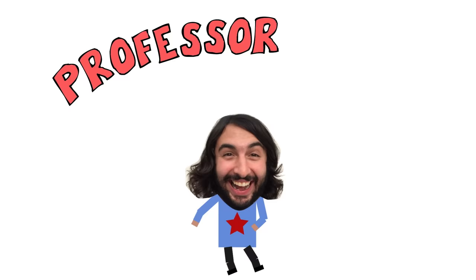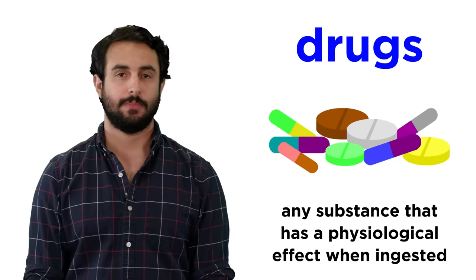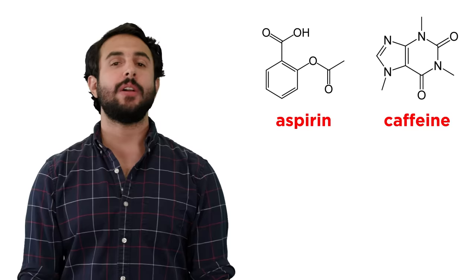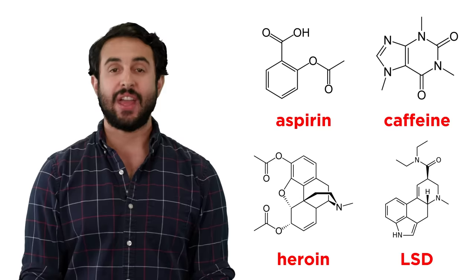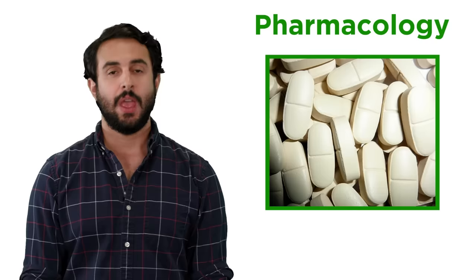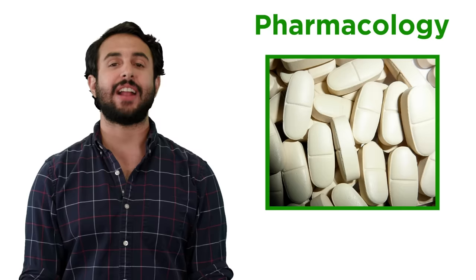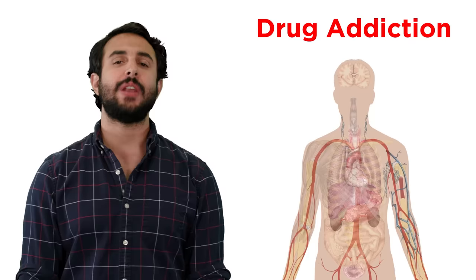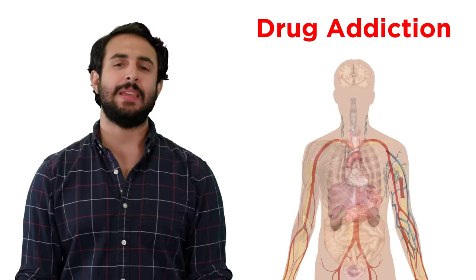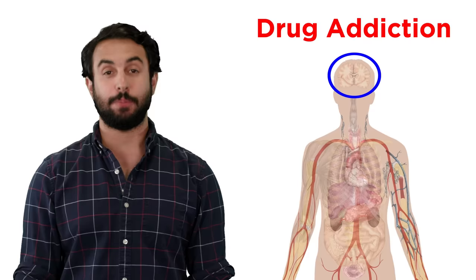It's Professor Dave, let's check out your brain on drugs. A drug is defined as any substance that has a physiological effect when ingested. Drugs can therefore range from something as common as aspirin or caffeine to all the illicit or hallucinogenic substances that typically come to mind. In the context of biopsychology, the phenomenon of drug addiction will be of significant interest to us. What does it mean to get addicted to a drug, how does this happen, and what does the corresponding brain activity look like?